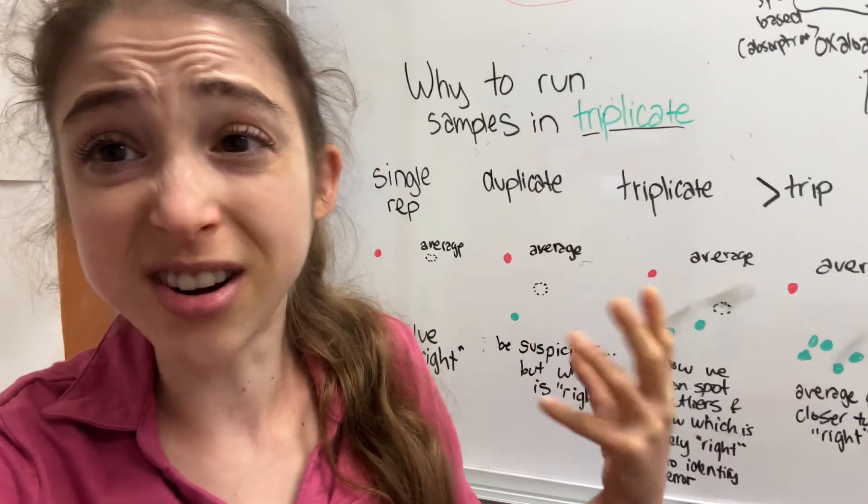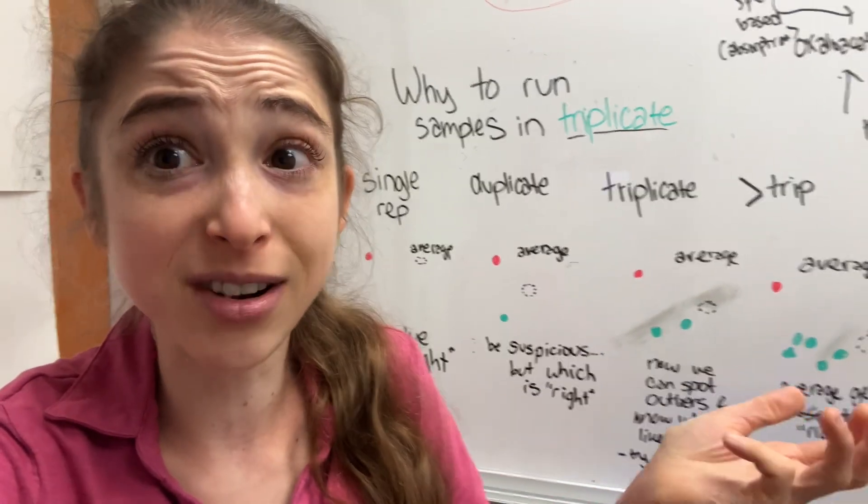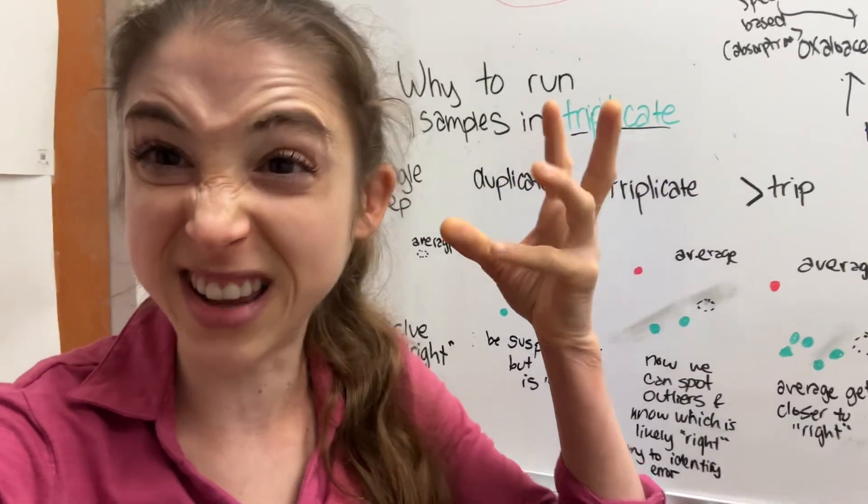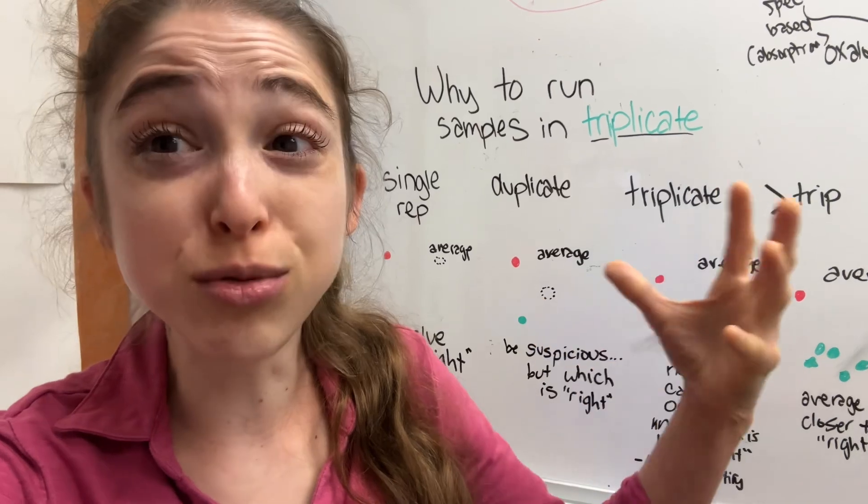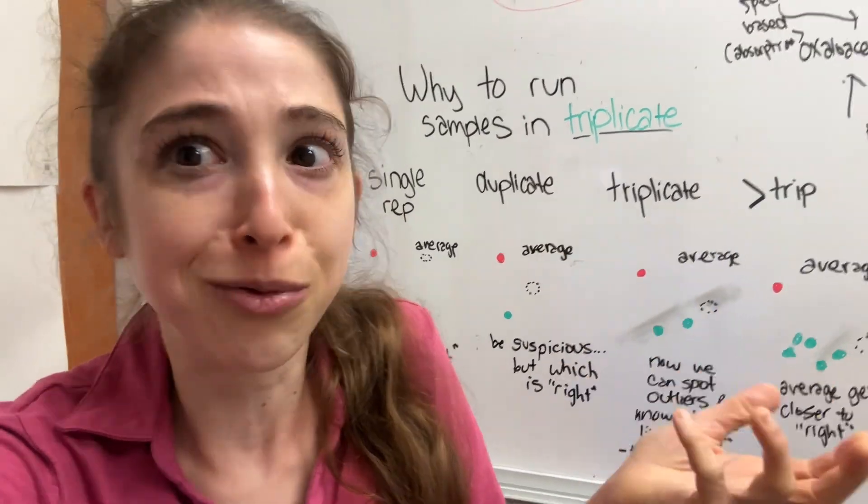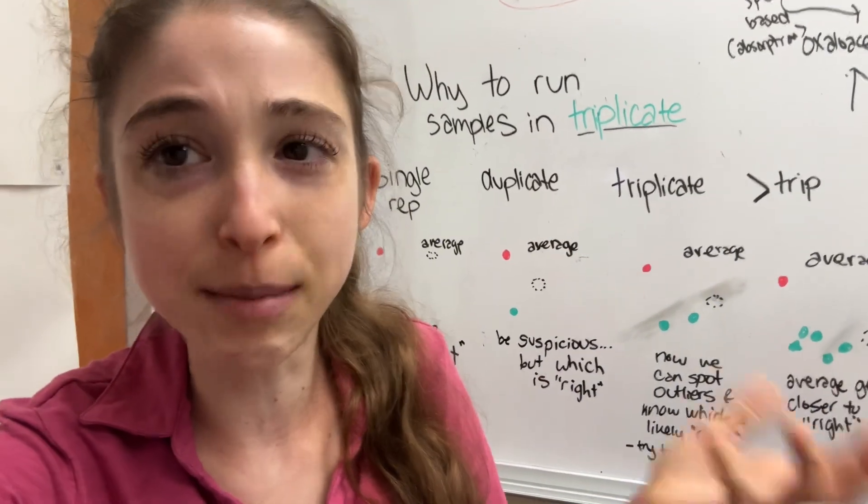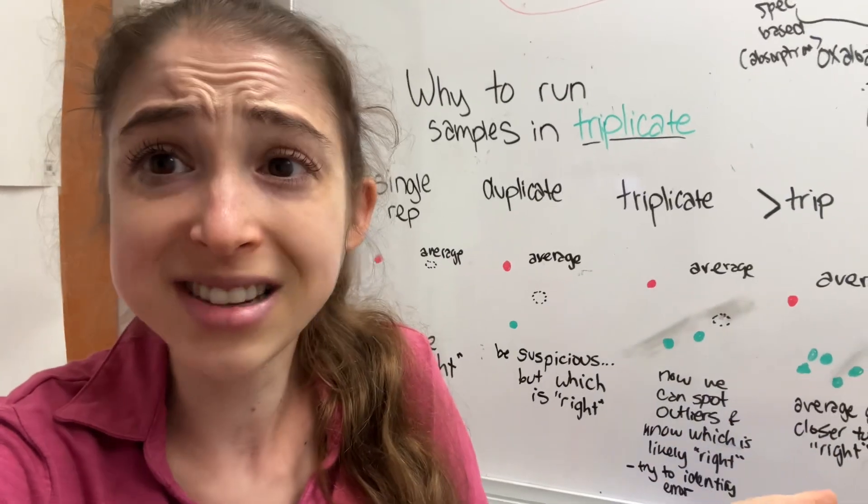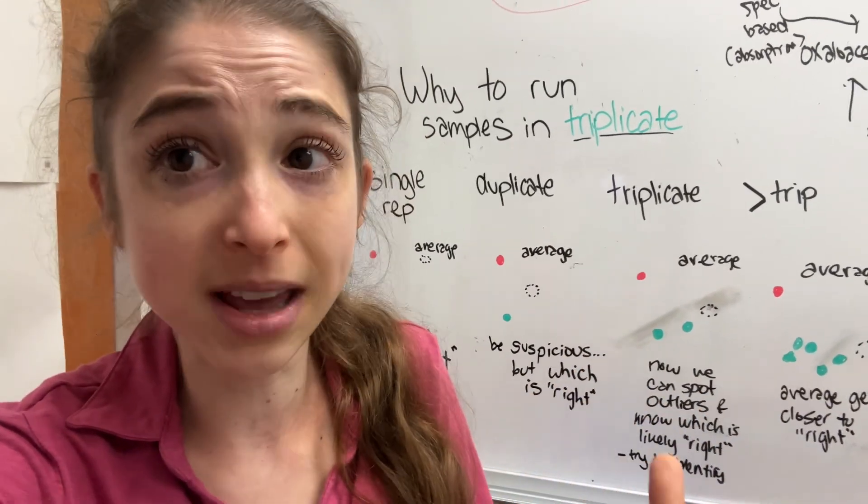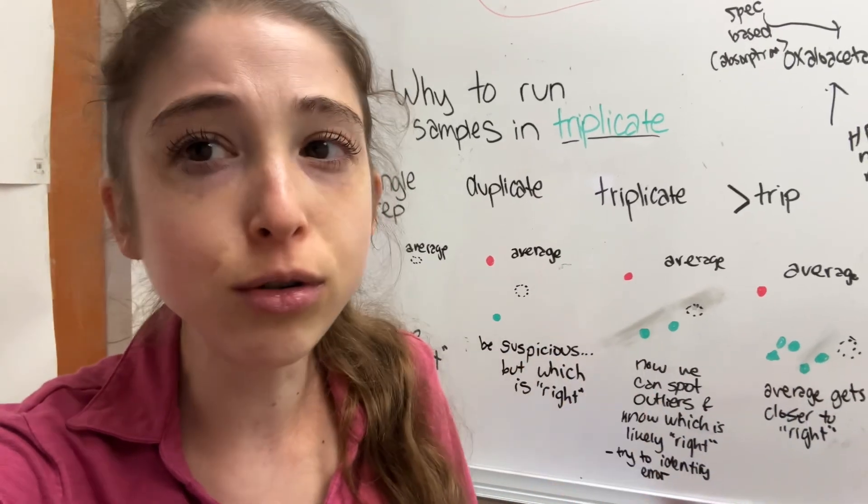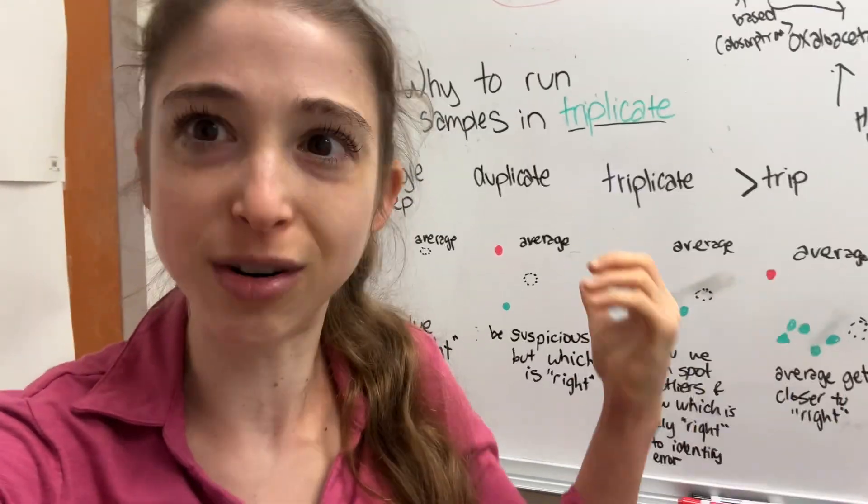And especially when you're starting out an experiment, you're trying to figure out how this experiment works and get a general idea of things. You really don't want to try to do too many samples because if it doesn't work, then you just wasted a lot of time and resources. And it takes a lot of time and resources to set up all those samples. So it's better to do things in triplicate and just triplicate, but include all those necessary controls in triplicate as well.